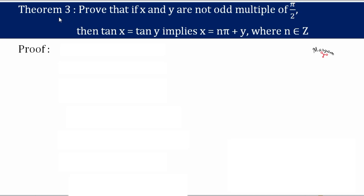Hello students. In this video, let's discuss Theorem 3 of the trigonometry chapter. We need to prove that if x and y are not odd multiples of π/2, then tan x = tan y implies x = nπ + y, where n belongs to ℤ.